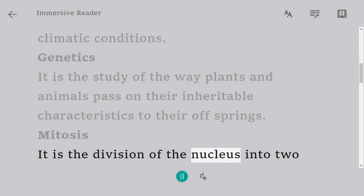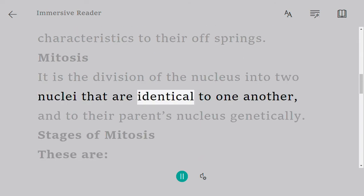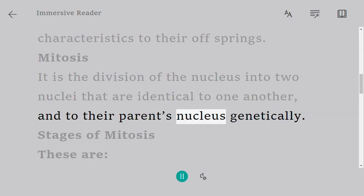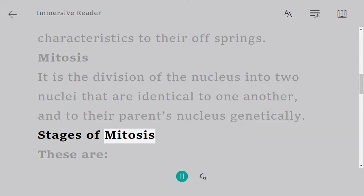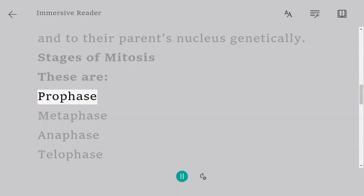Mitosis is the division of the nucleus into two nuclei that are identical to one another and to their parent nucleus genetically. Stages of mitosis include: prophase, metaphase, and anaphase.